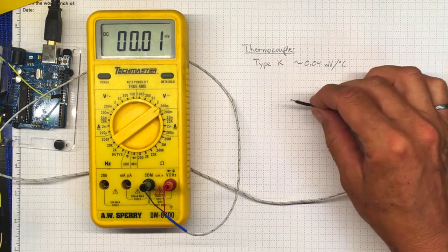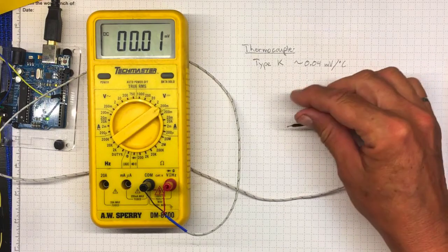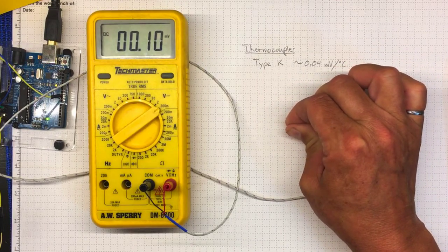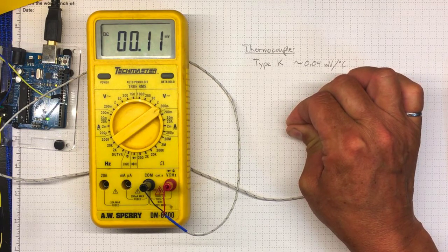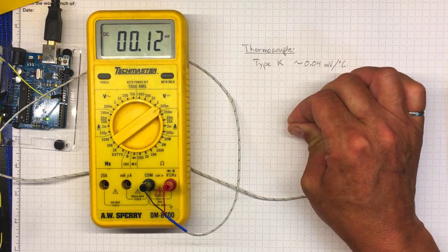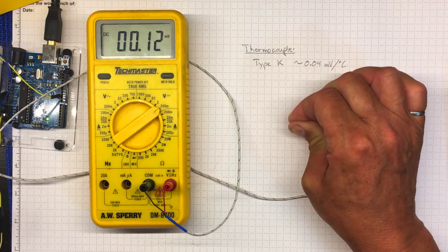Now we can heat this thermocouple up and measure the change in voltage on the multimeter and if I heat it between my fingers it's a warm day here so between my fingers it's only about three degrees warmer than it is out in the air because it went up by about 0.04 times three to about 0.12 millivolts.